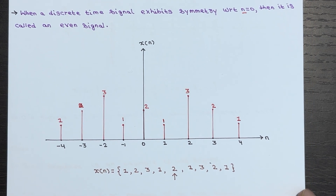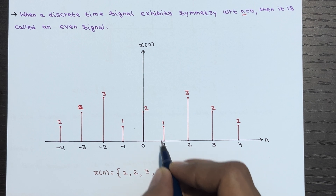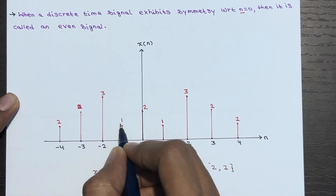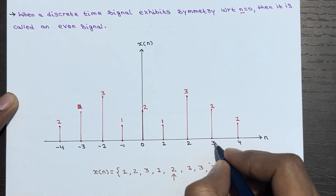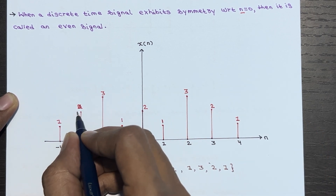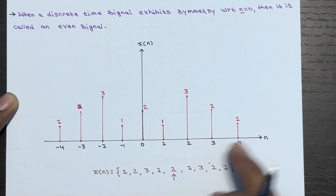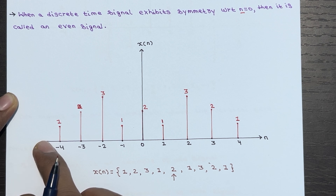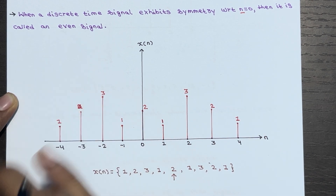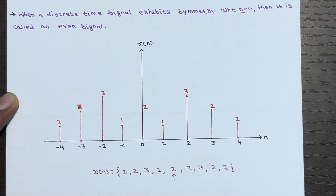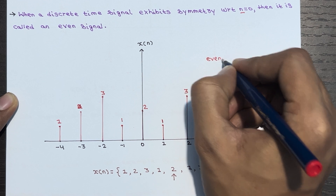Here we have a signal X(n). The value at 1 is 1, the value at -1 is also 1. The value at 2 is 3, the value at -2 is also 3. The value at 3 is 2, the value at -3 is also 2, and the same for 4. This signal is identical on both sides.